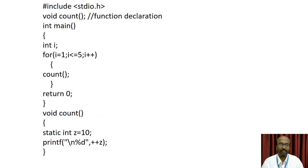Now let's discuss the program. The #include is the preprocessor directive, and stdio.h is the standard input/output header file which contains the library functions used for input and output. void count() is the function declaration, and in main — which is where the program starts its execution — we have declared an integer variable inside the block.